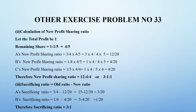Let us assume that the total profit of A, B and C is 1. C will be taking a one-fifth proportion, so after one-fifth, the balance four-fifths will be taken by A and B. A's new profit sharing ratio is equal to old profit sharing ratio 3/4 multiplied by remaining share 4/5, so numerator into numerator and denominator into denominator: 3 into 4 is 12.